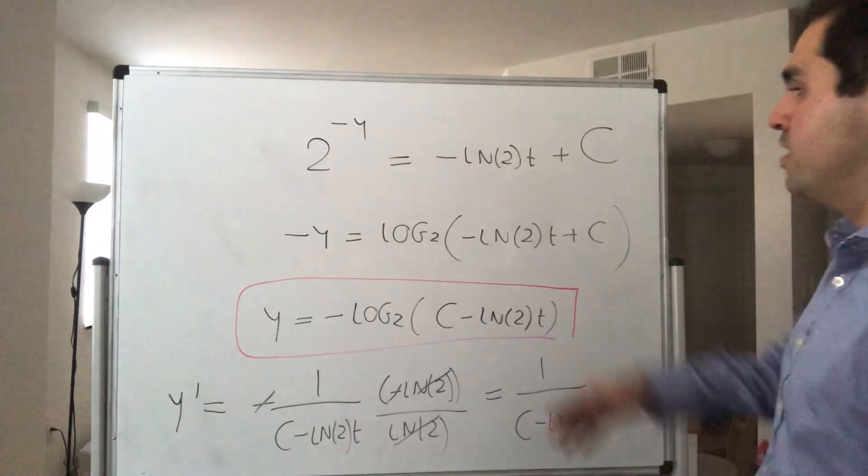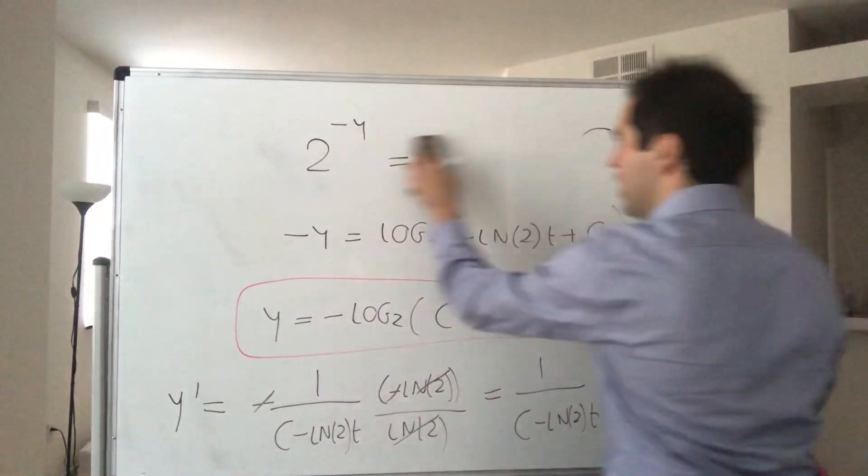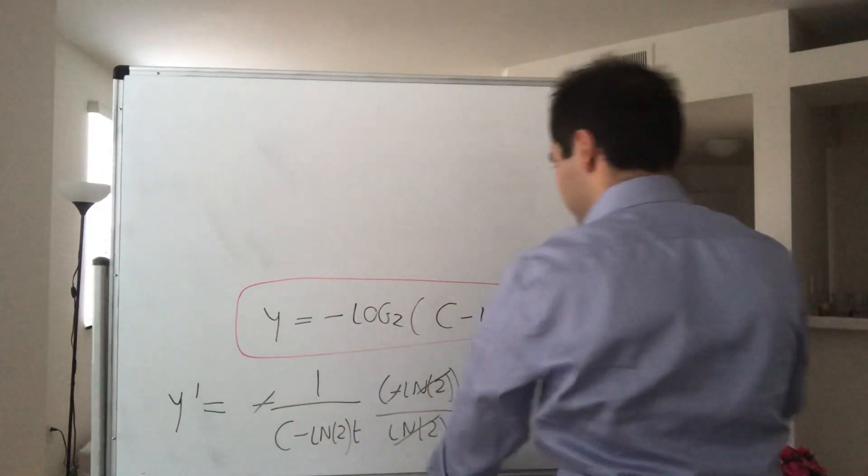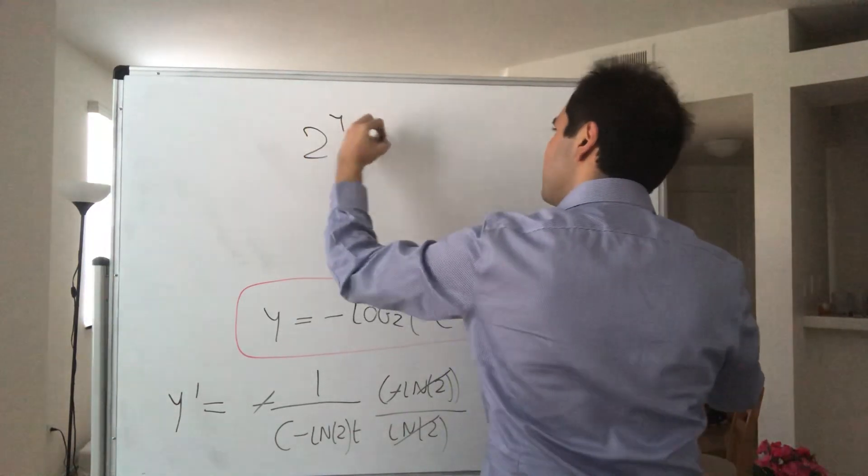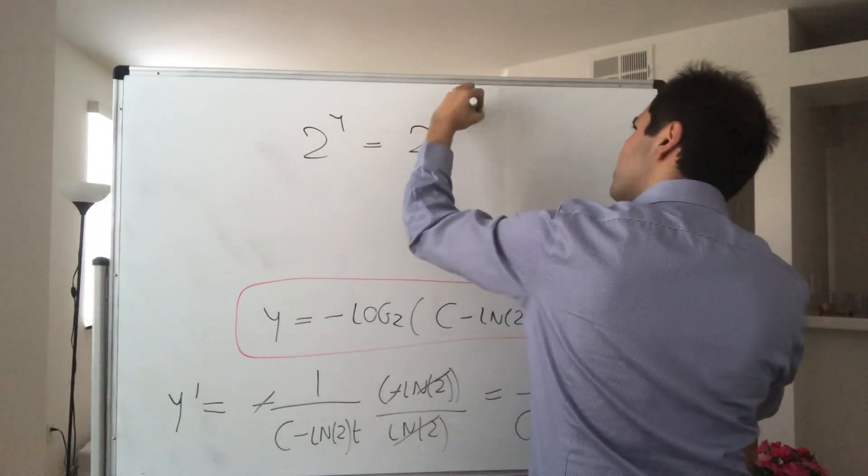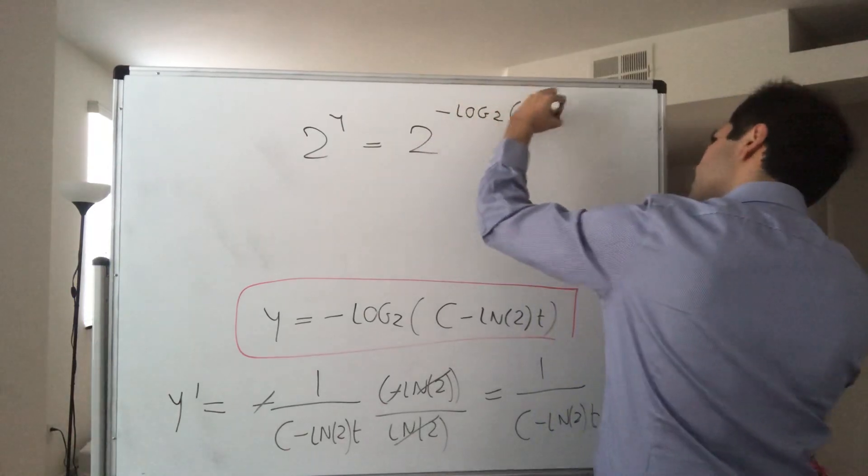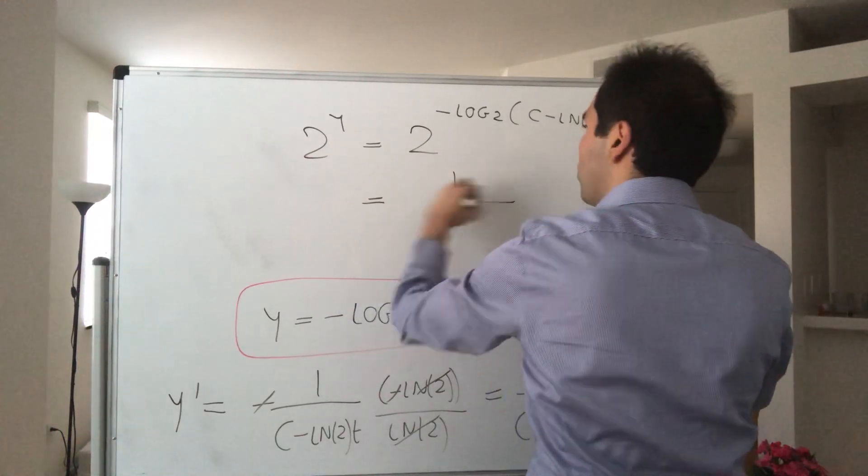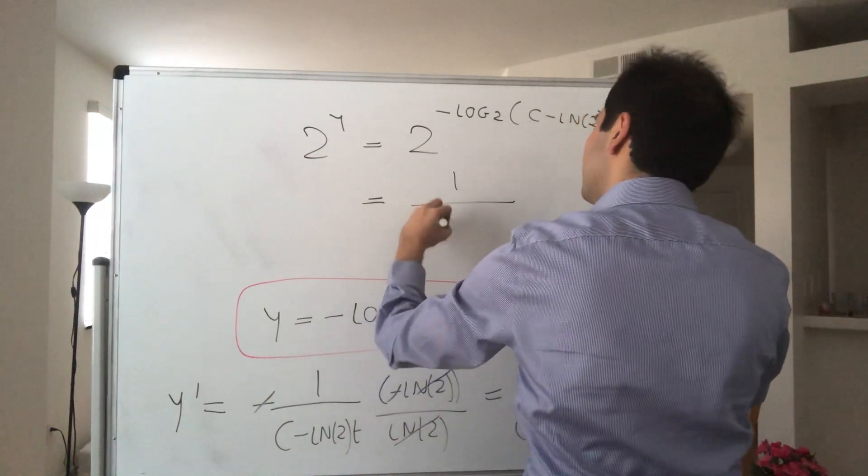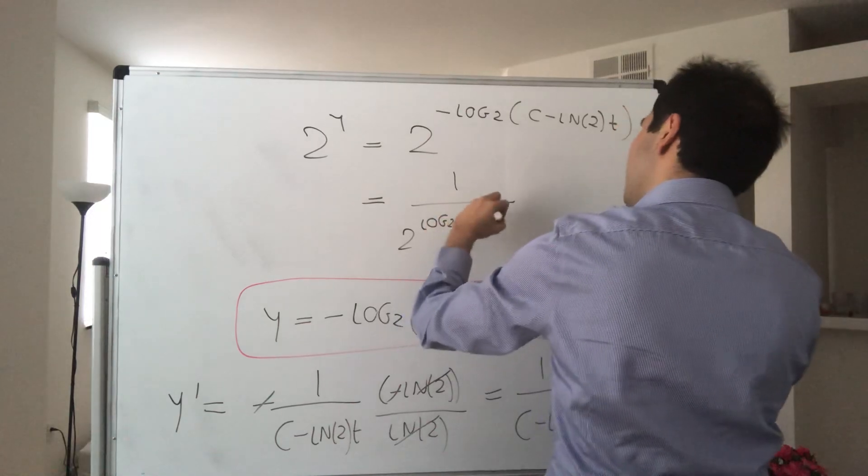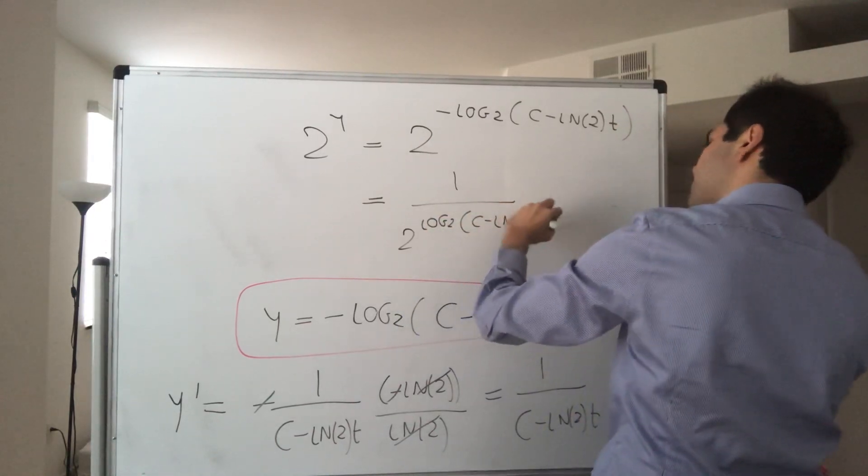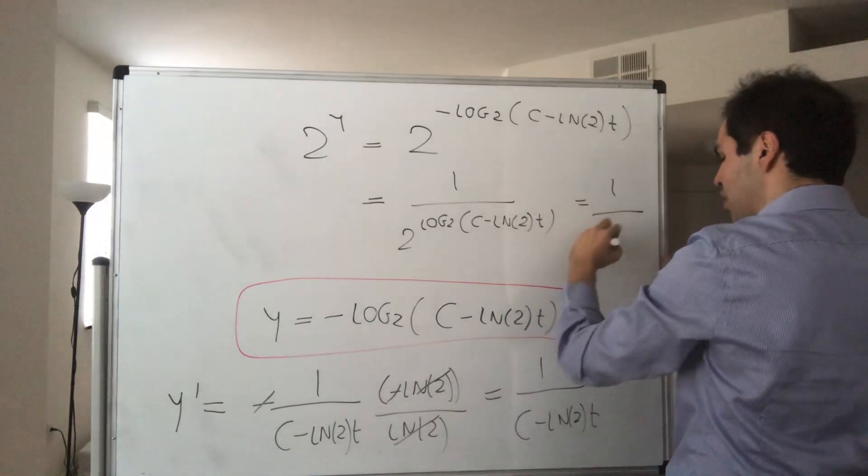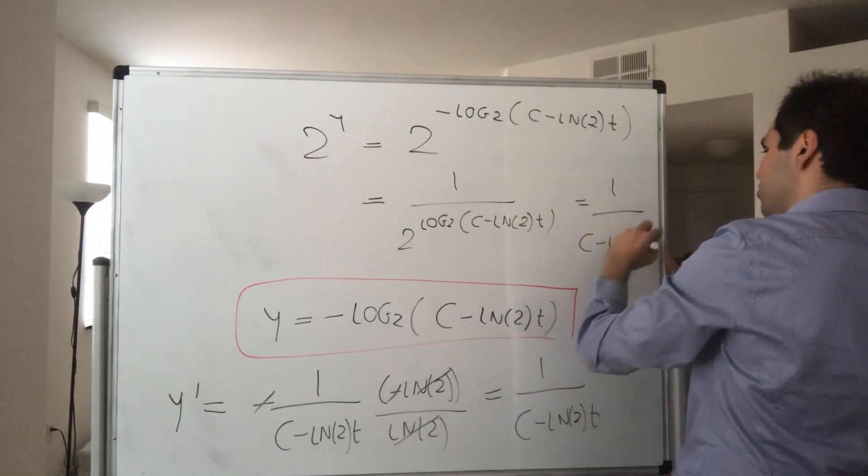On the other hand, let's take two to the y. That becomes two to the minus log base two of c minus ln of two t, which is one over two to the log base two of c minus ln of two t. But two to the log base two cancel out, and indeed you get one over c minus ln of two t.